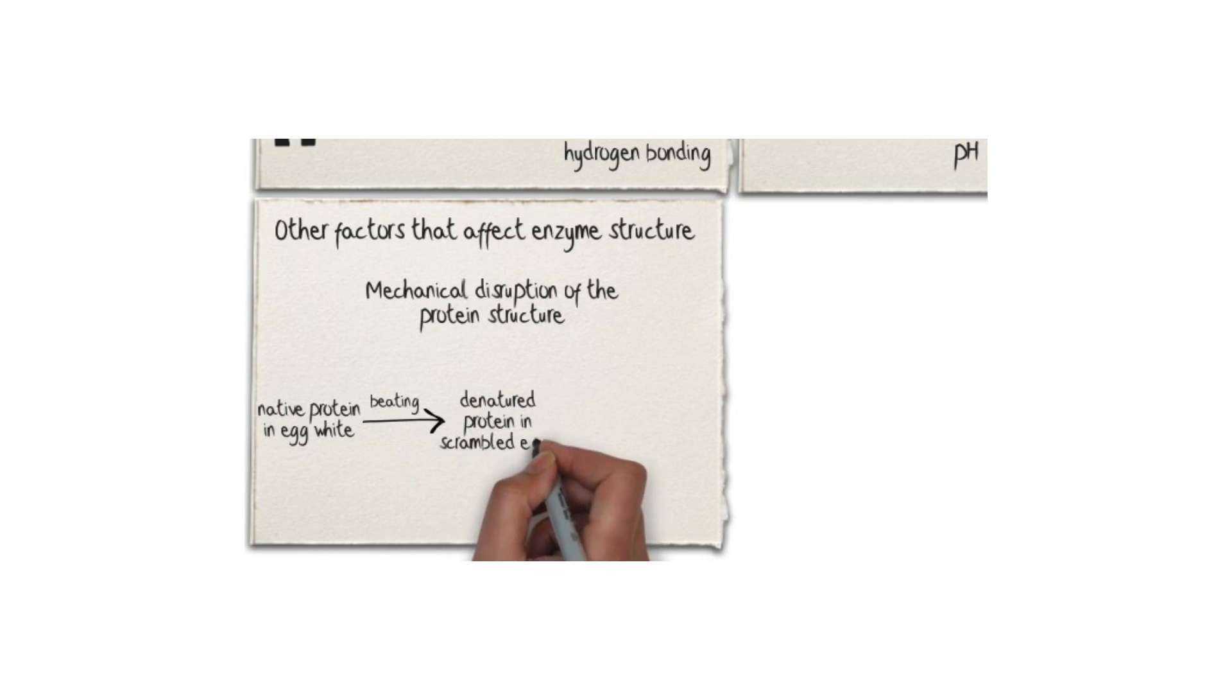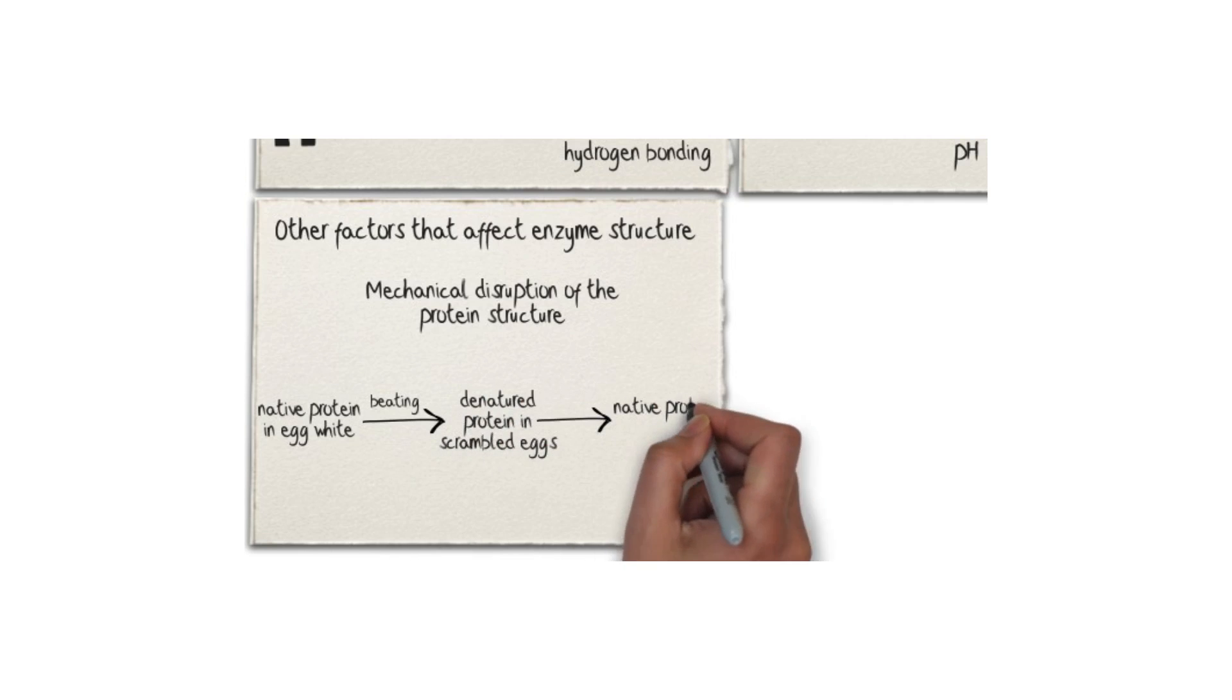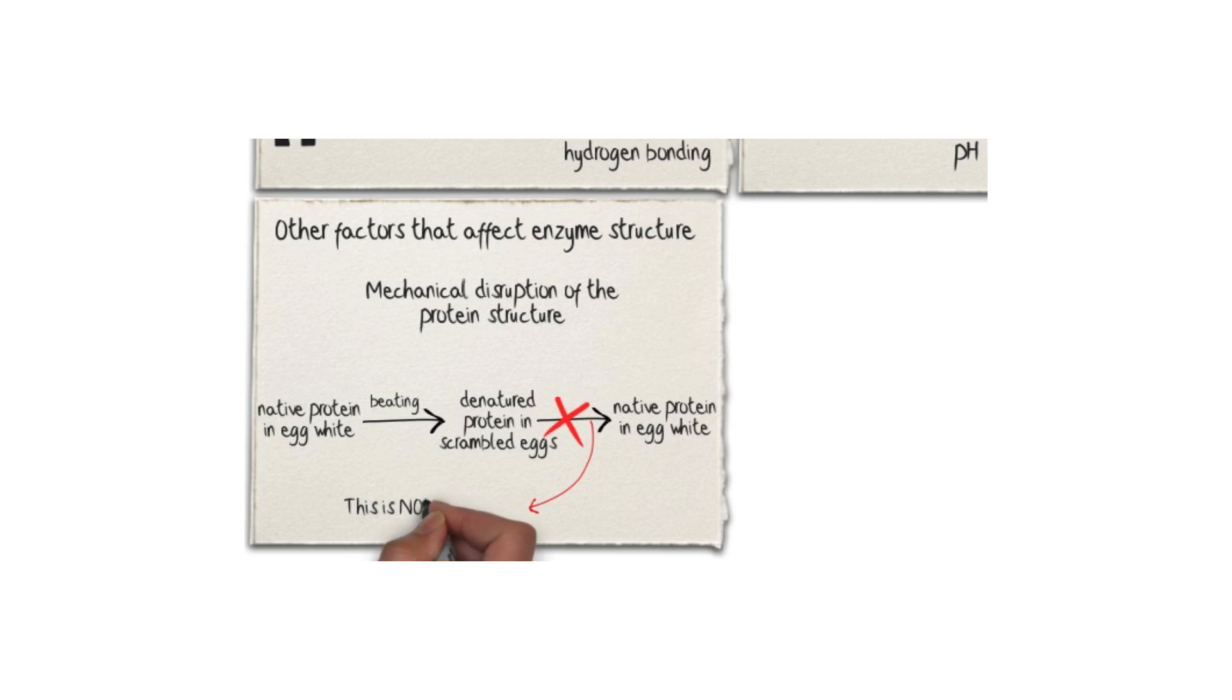The proteins in the egg white are literally stretched when the eggs are beaten. In this case, denaturation is irreversible. Beaten eggs cannot be turned back into the viscous material in the egg white.